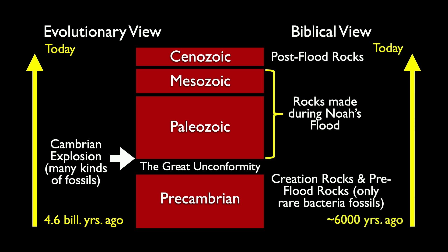Over millions of years — about 4.6 billion years — the rock layers formed: the igneous rock, metamorphic rocks, and then the sedimentary rocks with fossils in them. We contrasted that with the biblical view that God created the Earth about 6,000 years ago. The very lowest rocks of the Earth are creation-week rocks, and most of the sedimentary rocks are the result of Noah's Flood.